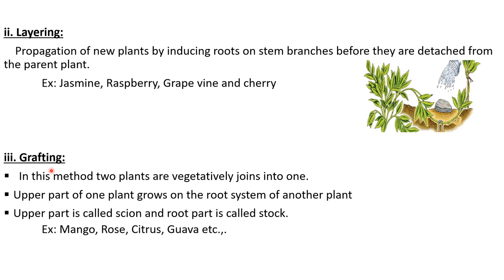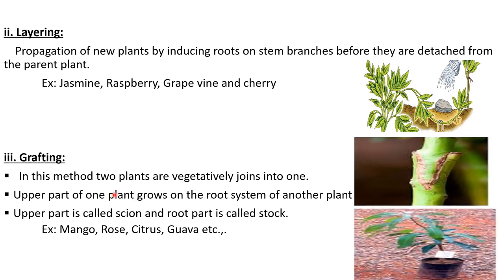The third method of artificial vegetative propagation is grafting. For implementing this method, two plants are required. The upper part of one plant grows on the root system of another plant — the upper part is called scion, and the lower root part is called stock. First, we make cuttings or remove the required amount of tissue from both plant parts, then make both parts fit and attach them tightly with the help of thread or other material. After some time, the tissues of both scion and stock mingle, get together, and develop into a single plant. This method is mainly used for obtaining desired qualities or characters in a plant.